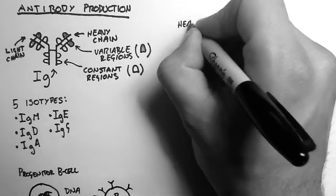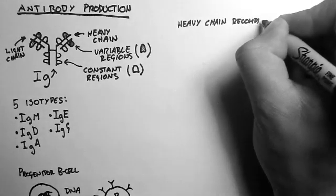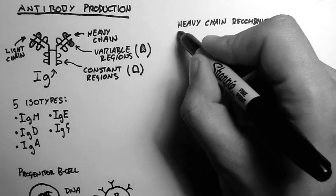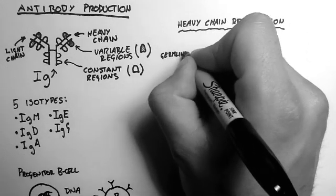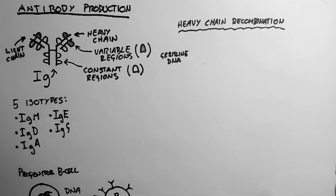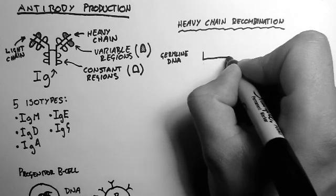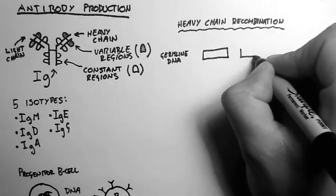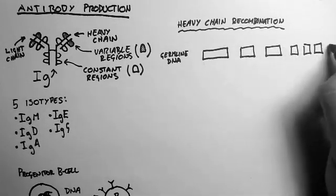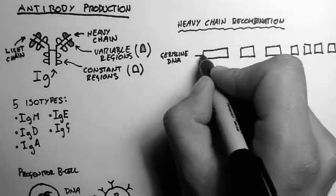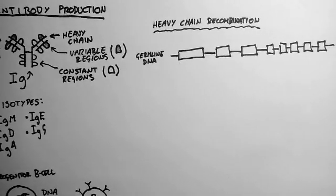So what we're going to have a look at is how a heavy chain is formed. This is heavy chain recombination of the genes during the DNA shuffle, and it happens in an organized way. So we're looking at the germline DNA, the original DNA. And there's a whole long string of DNA with various regions on it, and I'll draw it out schematically here. So imagine this is a long string of DNA with various genes on it.